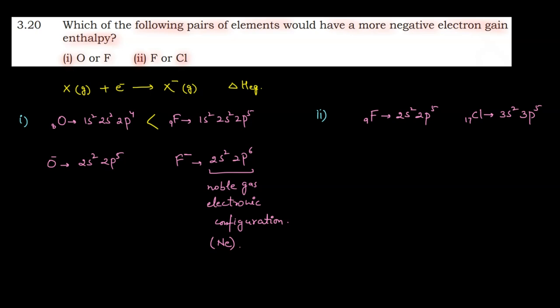When fluorine gains an electron, F⁻ has electronic configuration 2s², 2p⁶. When chlorine gains an electron, Cl⁻ has electronic configuration 3s², 3p⁶.